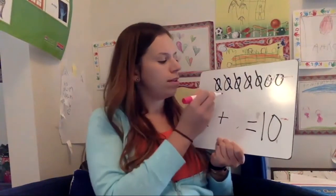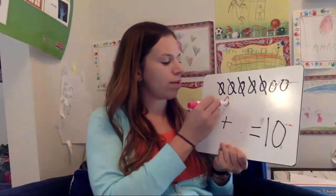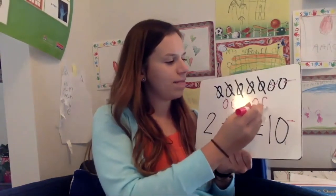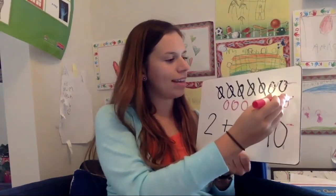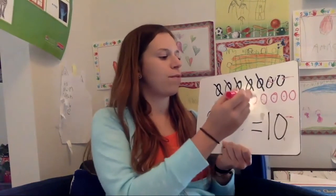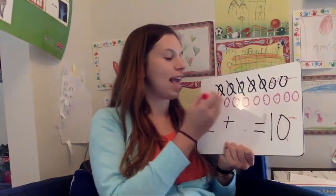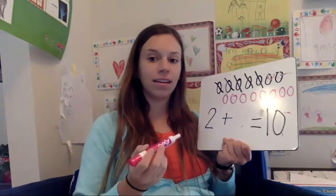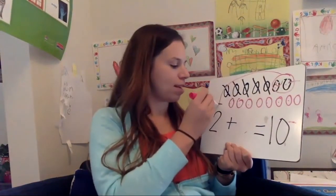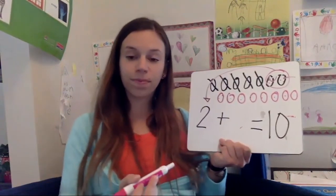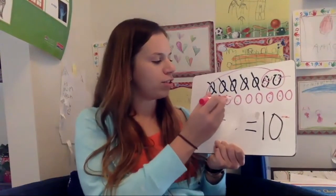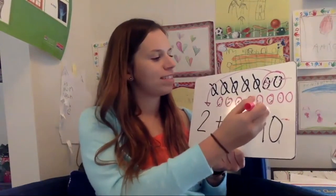We have one, two. What if we add another one? Three, four, five, six, seven, eight, nine, ten. One, two, three, four, five, six, seven, eight, nine, ten. Now these two are already there, which means we need to add these in: one, two, three, four, five, six, seven, eight.